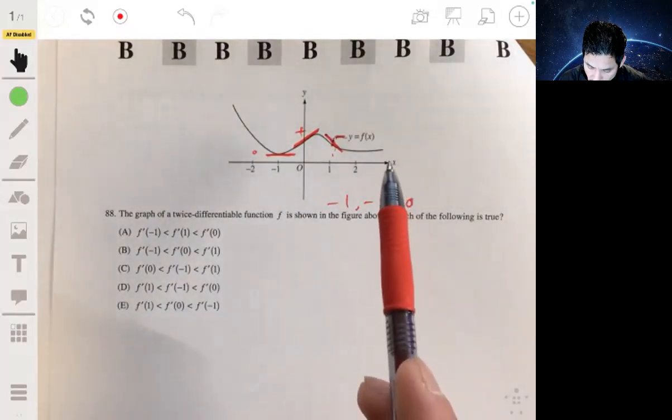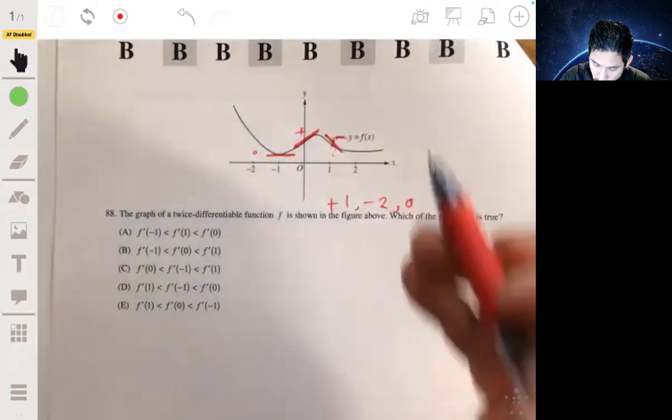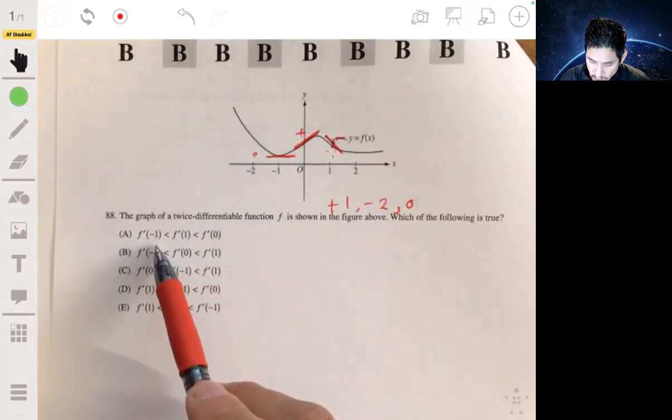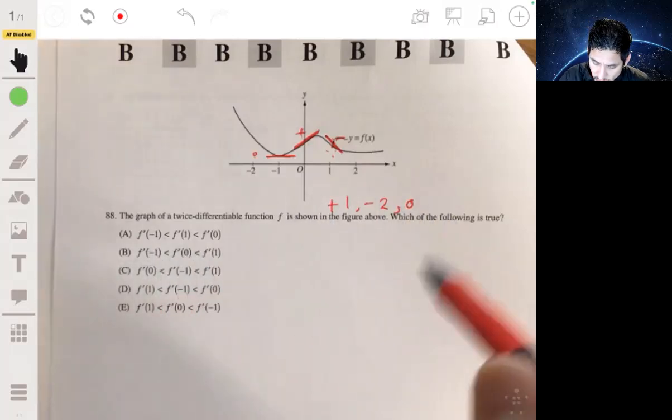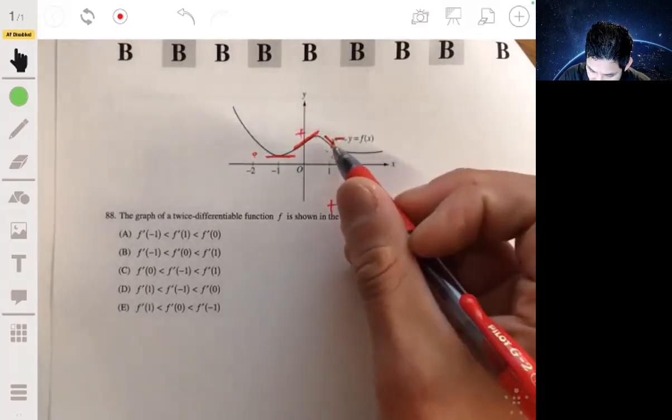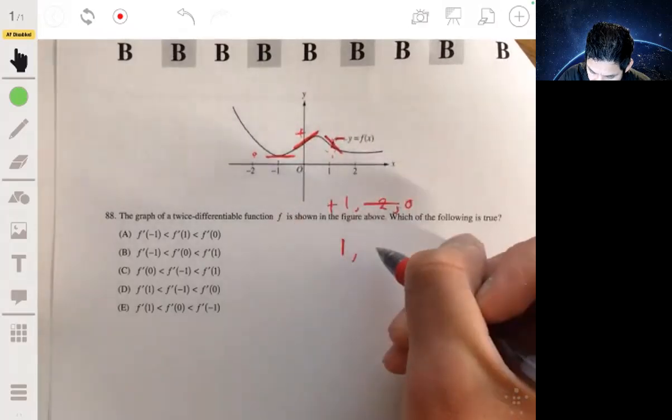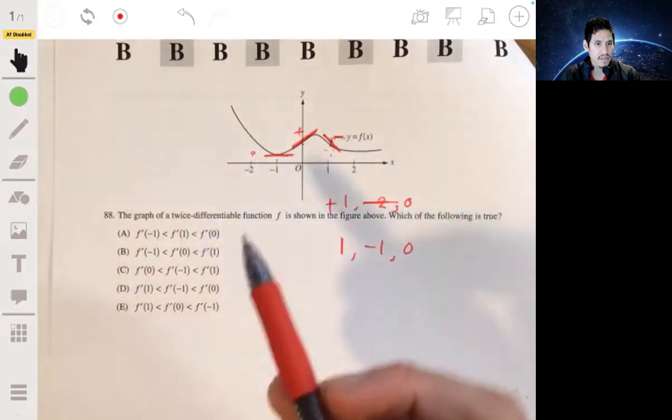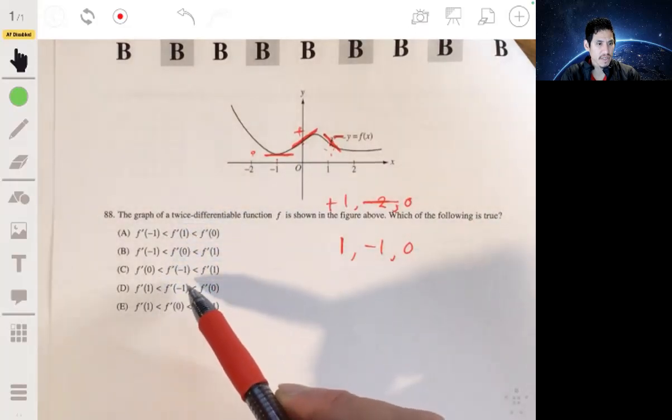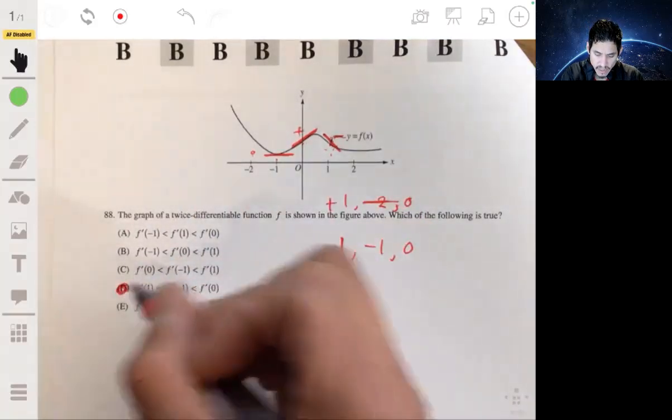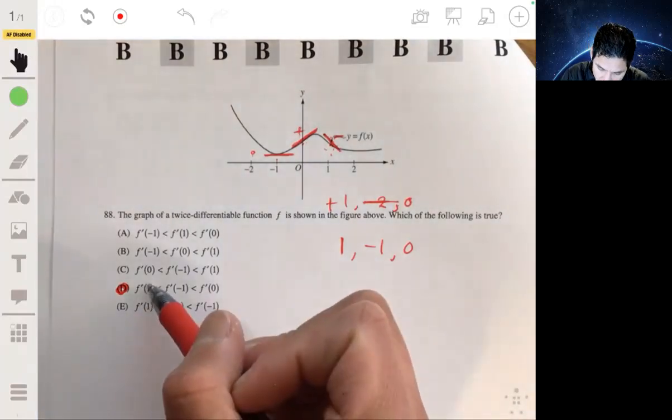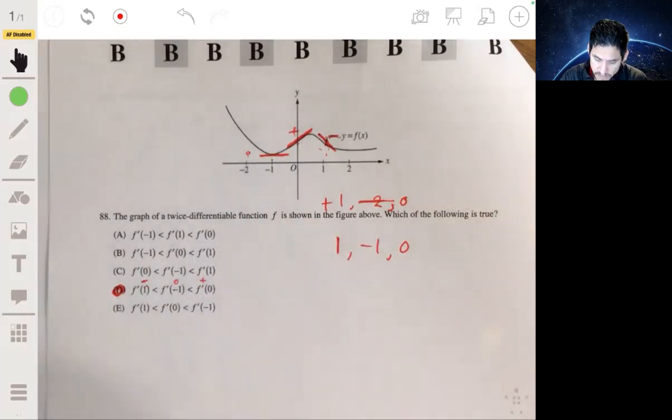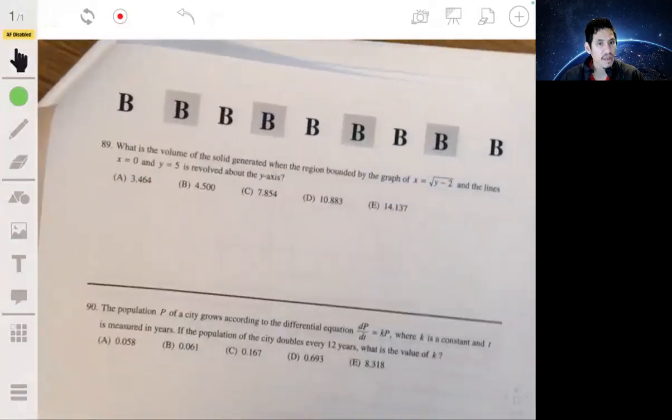So we want to see where. Oh, I'm sorry, f prime of 1. So 1, negative 1, 0, if we're going from smallest to biggest. Let me fix this. 1 is the smallest, then negative 1, and then 0. Smallest to largest. So let's see, where does 1 go first? b or e, so it looks like that's going to be b. f prime of 1 is a negative value, f prime of negative 1 looks like a 0, and f prime of 0 is positive.